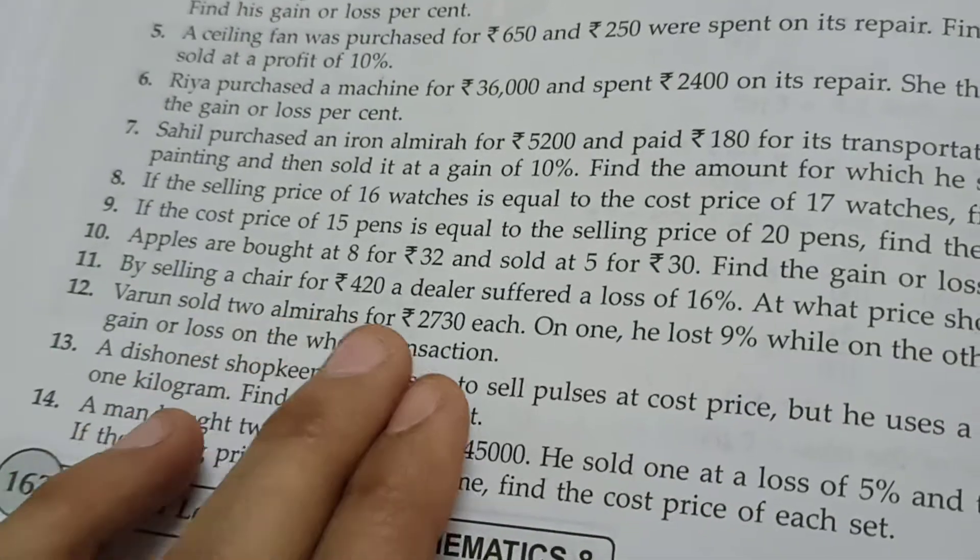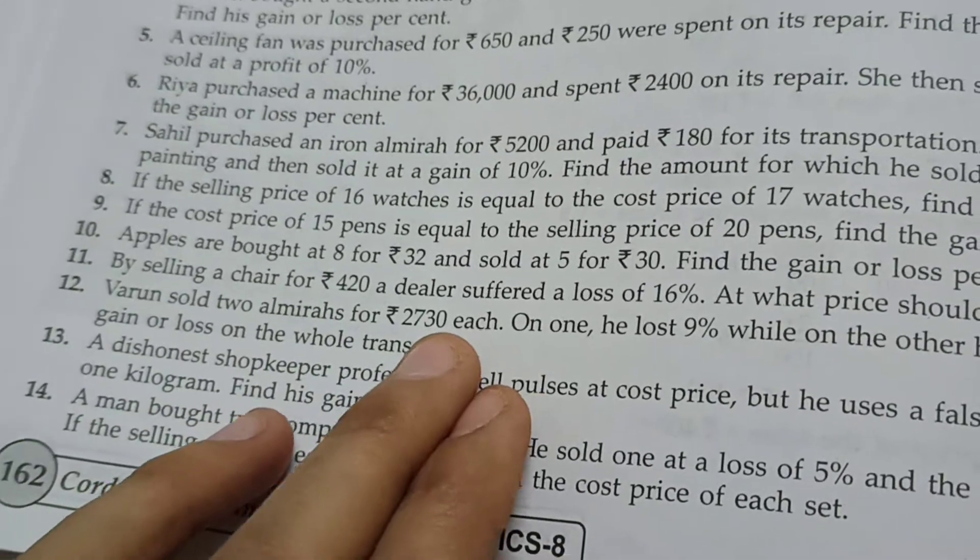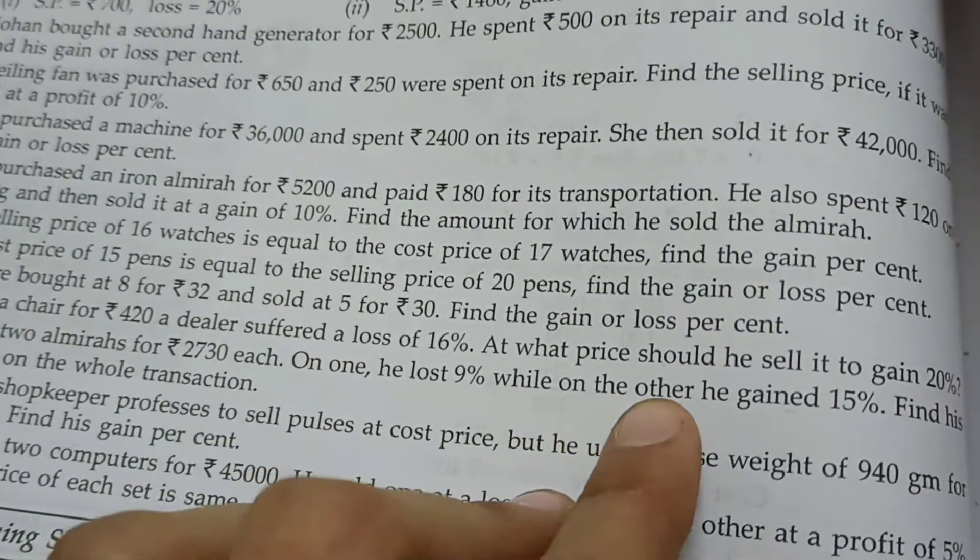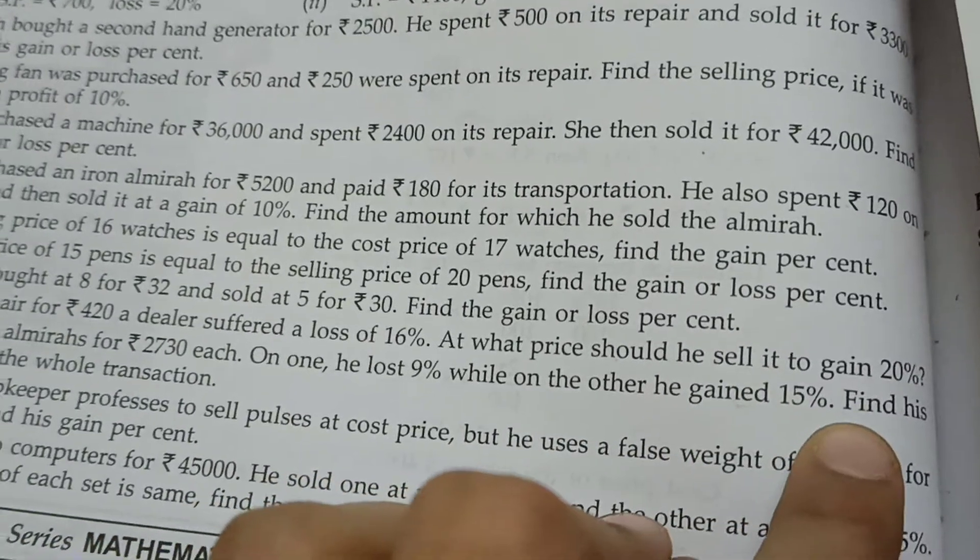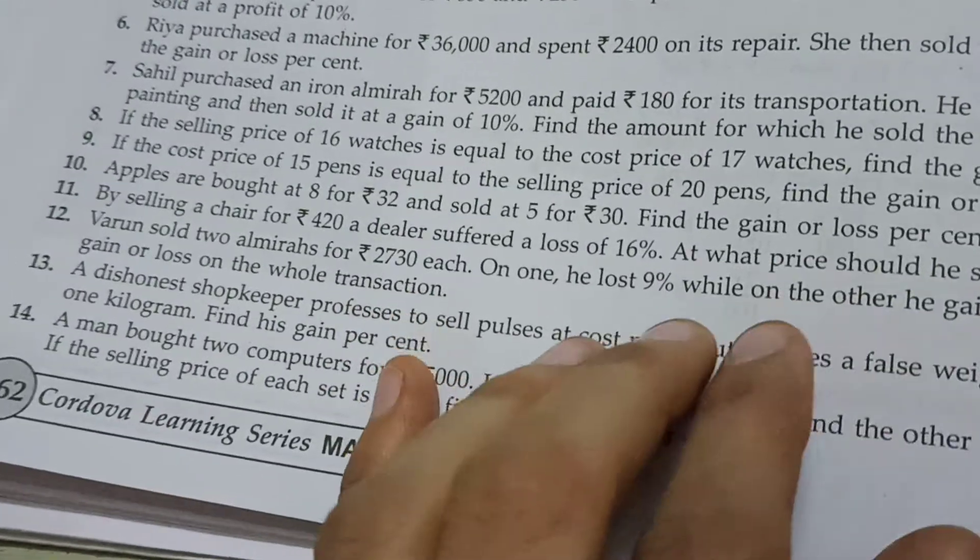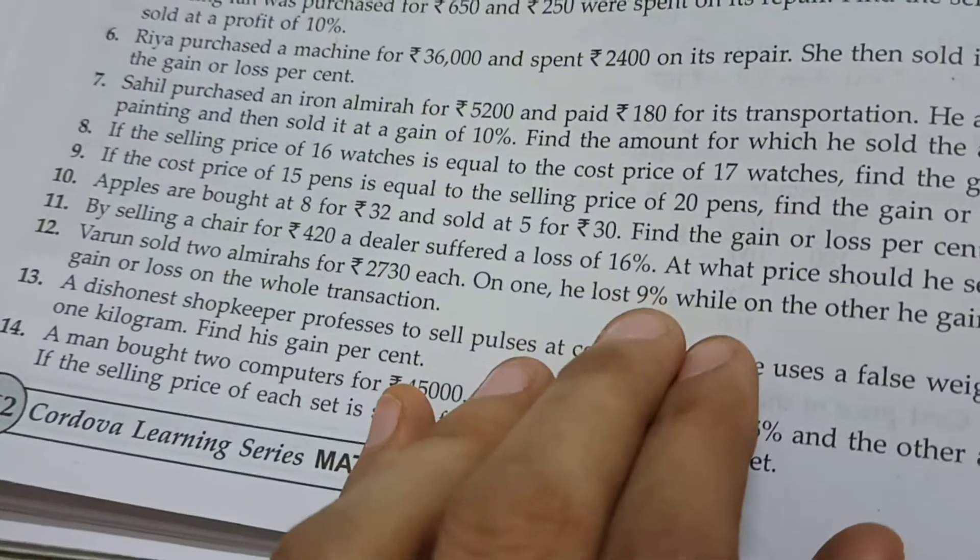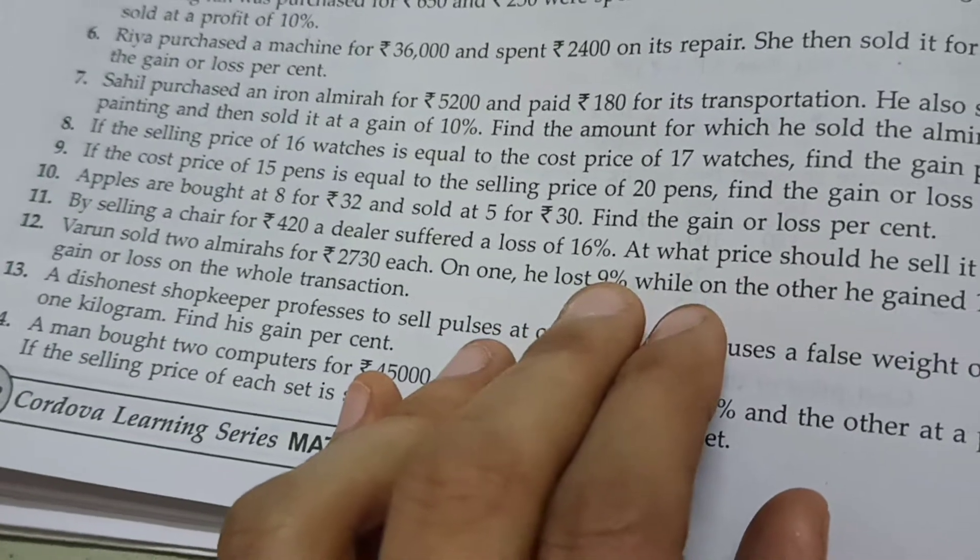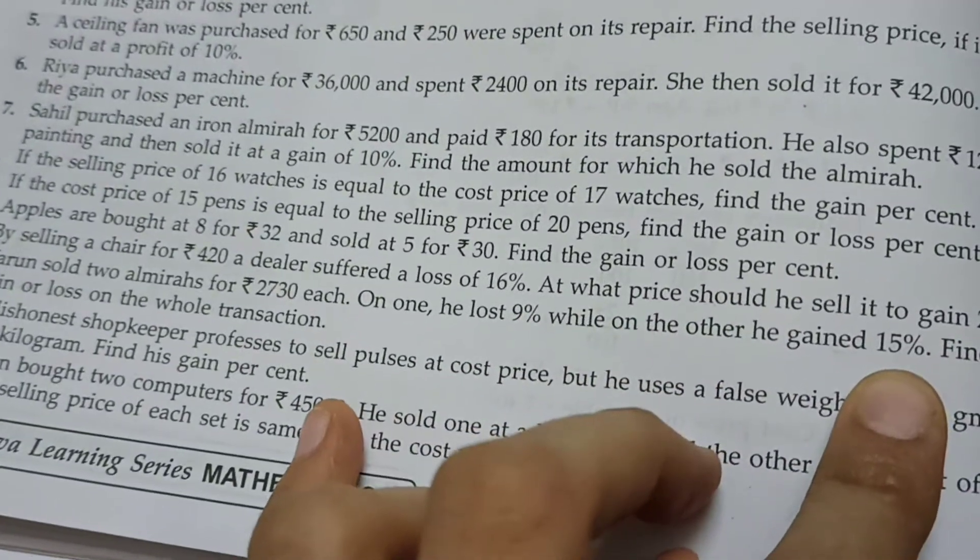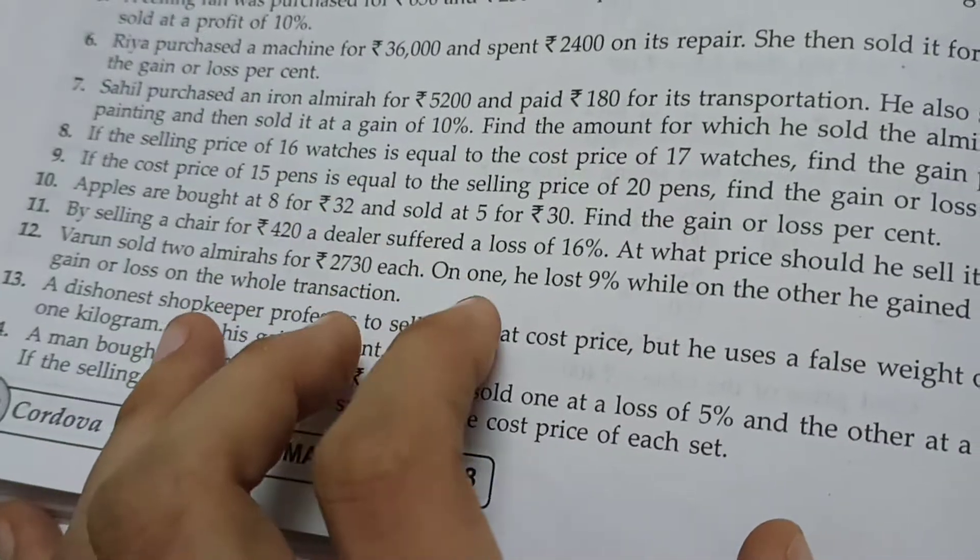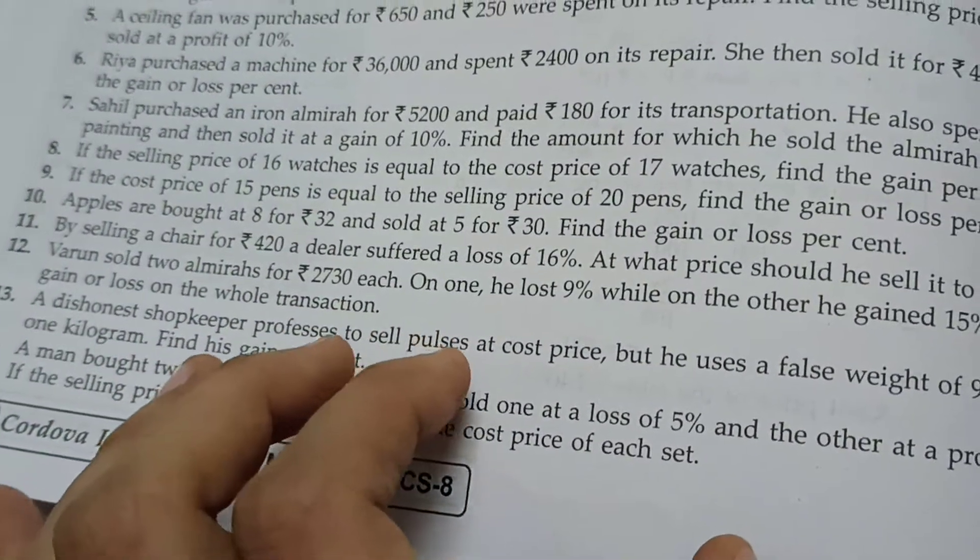Varun sold two Almiras for Rs. 2730 each. On one, he lost 9%, while on the other, he gained 15%. Find his gain or loss on the whole transaction. So, we need to find total gain or loss.